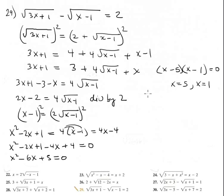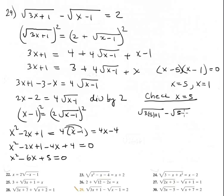Checking x equals 5: square root of 3 times 5 plus 1 minus the square root of 5 minus 1 should equal 2. That's square root of 16 minus square root of 4, which is 4 minus 2 equals 2. True.